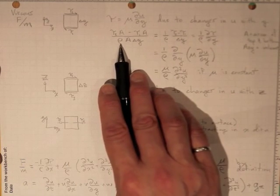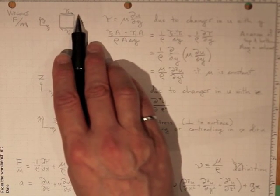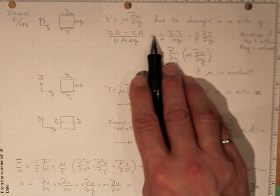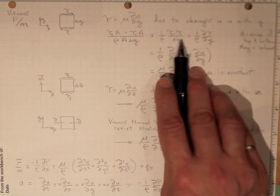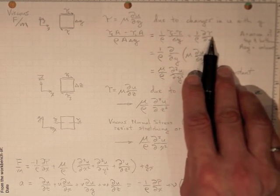The mass again is density times volume, so a times delta y, the distance up there. If we rearrange that, that's 1 over rho, tau 2 minus tau 1 over delta y, or 1 over rho di tau di y.